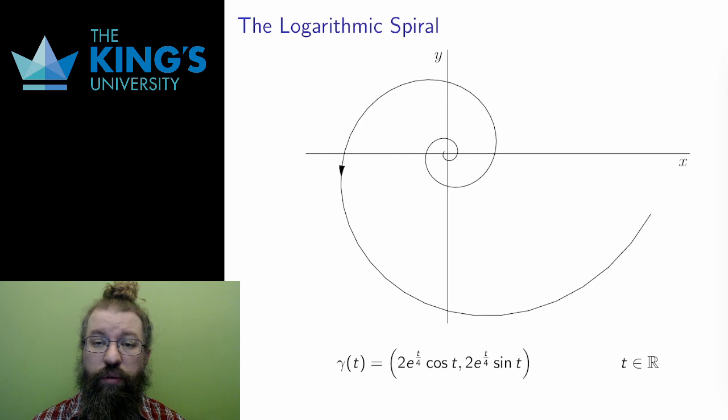Here is a logarithmic spiral, where the radius is increasing exponentially. This is a very common naturally occurring spiral, showing up in many phenomena from nautilus shells to spiral galaxies. The parameters 2 and 4 can, of course, be altered to change the rate at which this spiral increases.